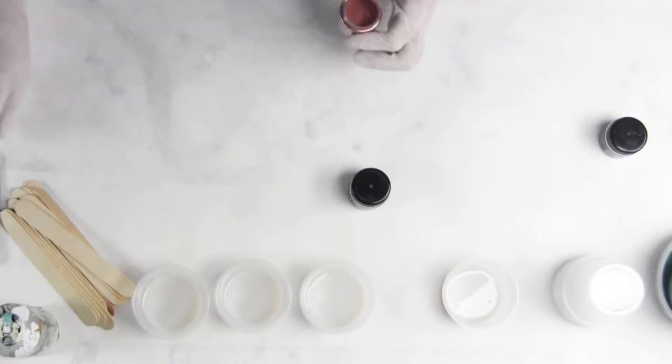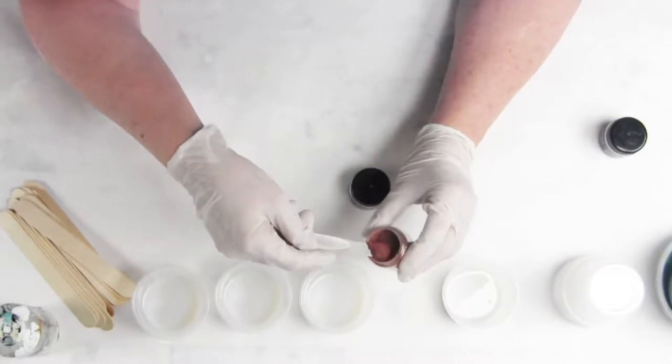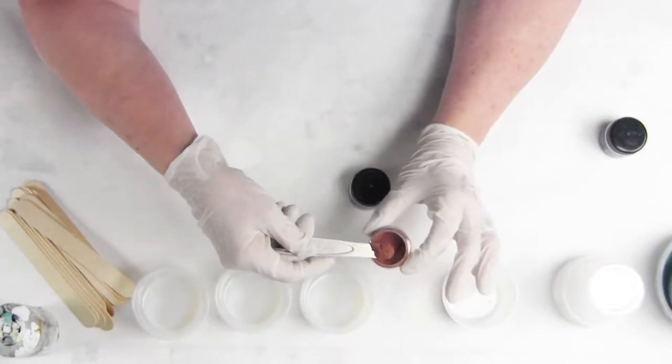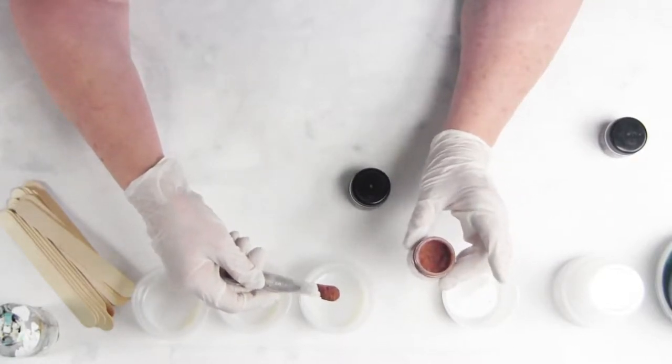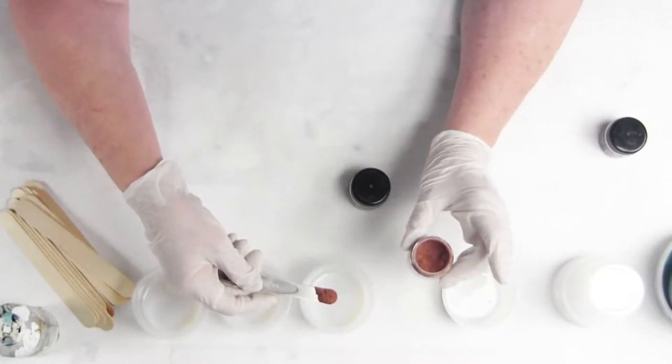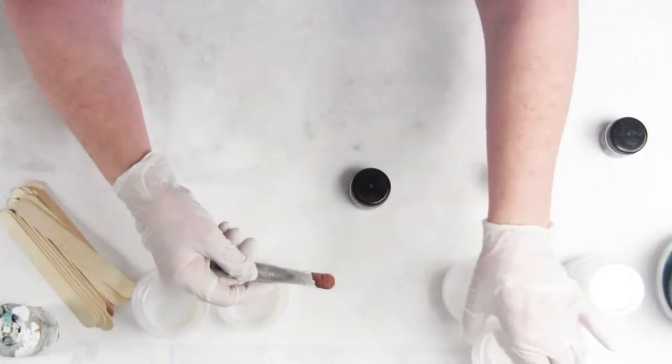If you use interference red it's going to turn it pink. So we use a minimum amount of the mica in there to give them just a little bit of bling but maintain that rich color of red.